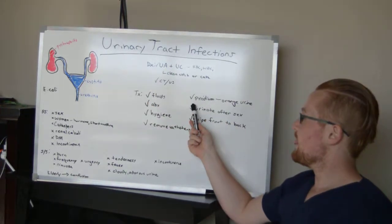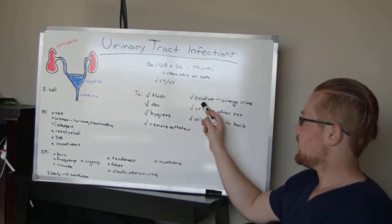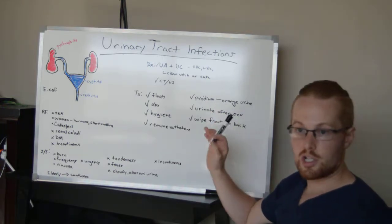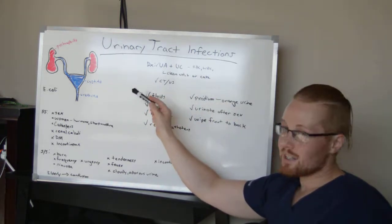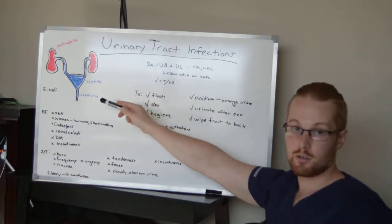They'll love to throw this on the test: when you take Pyridium, your urine turns orange and that's normal, but keep that in mind. This is a urinary tract infection. My next video, we're going to talk about pyelonephritis.